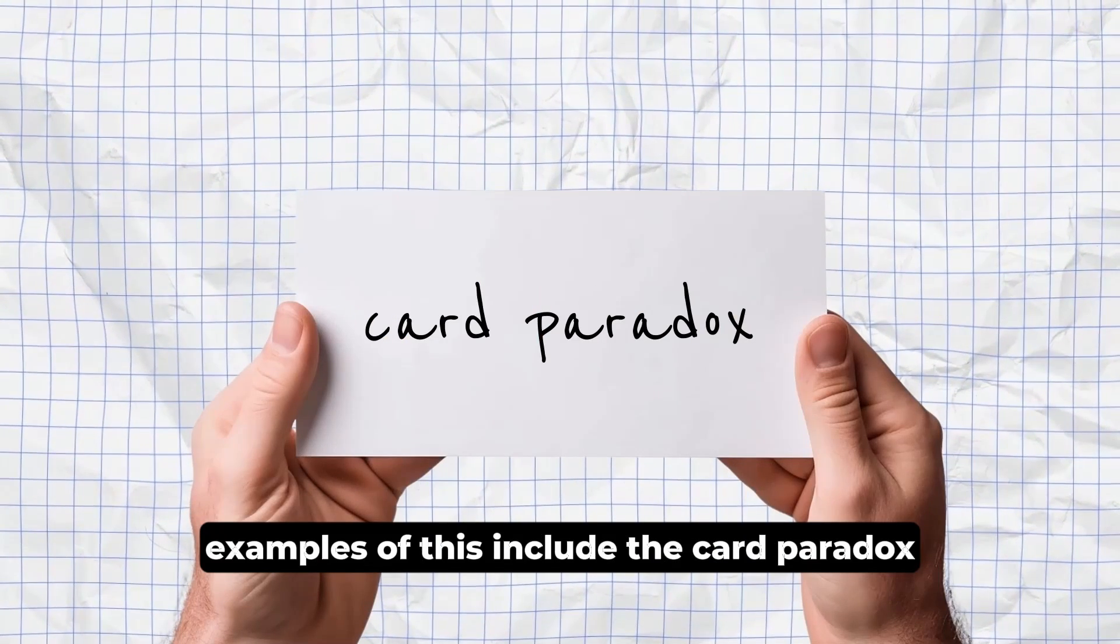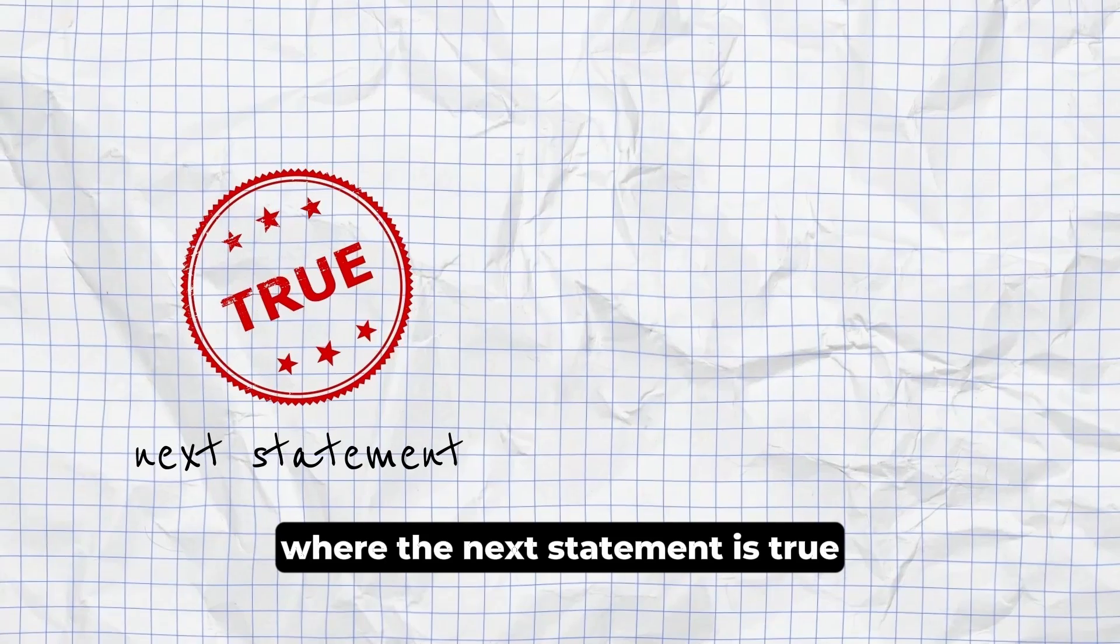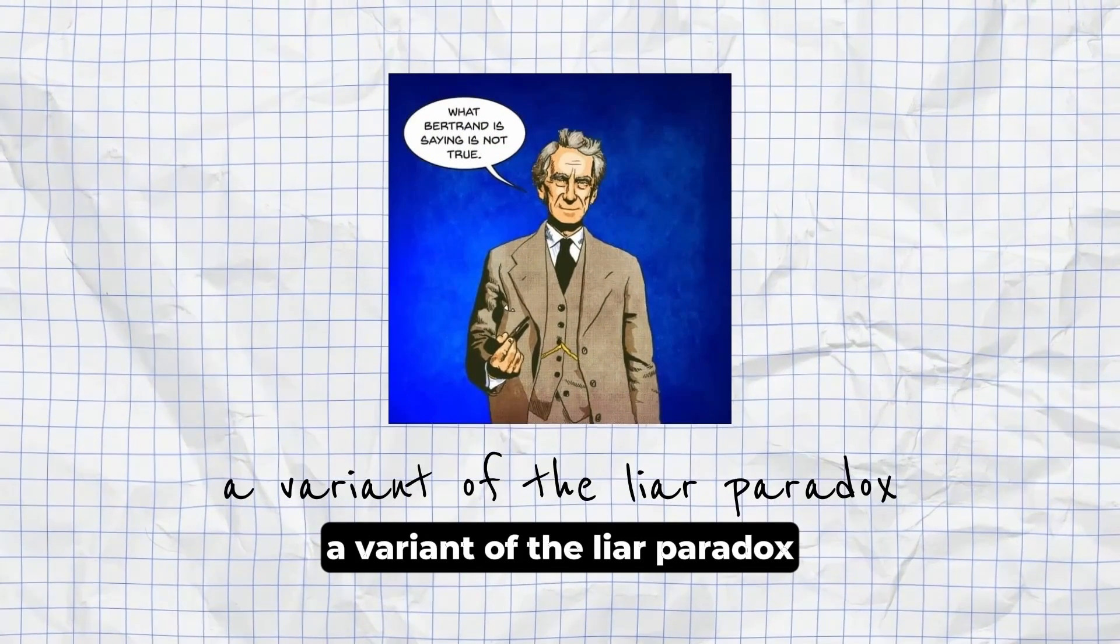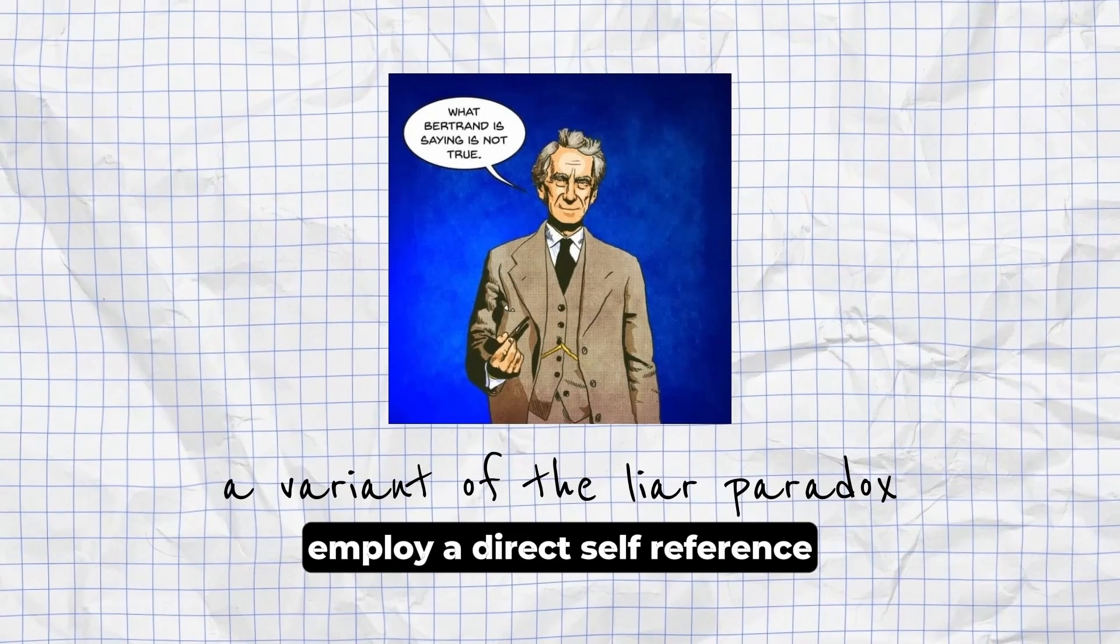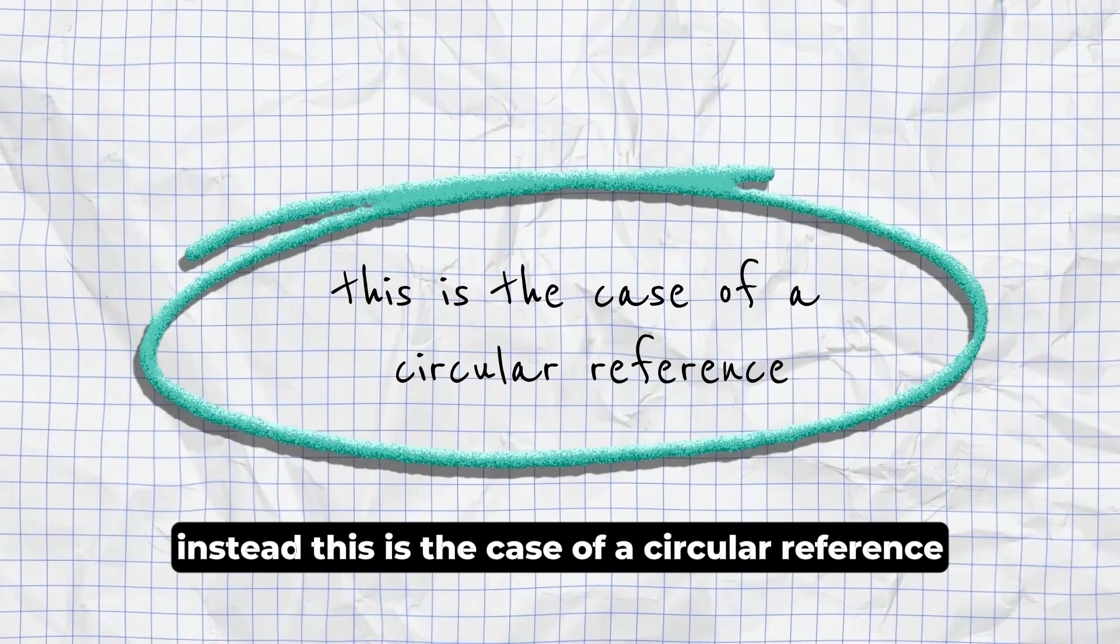Examples of this include the Card Paradox, where the next statement is true and the previous statement is false. A variant of the Liar Paradox, in which neither of the sentences employ a direct self-reference. Instead, this is the case of a circular reference.